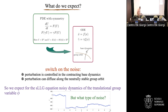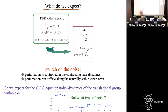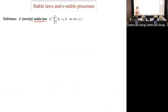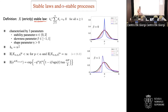Let me briefly explain what alpha-stable processes are, and then discuss some known mechanisms for generating them. A random variable X is strictly alpha-stable if you can sum copies, scale appropriately, and get the same distribution back. Gaussian variables are one example where the normalization is square root of n. There's a three-parameter family: the stability parameter alpha, the skewness parameter beta, and a shape parameter — these are called alpha-stable laws.